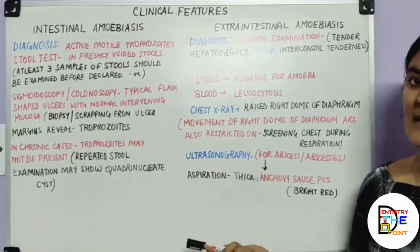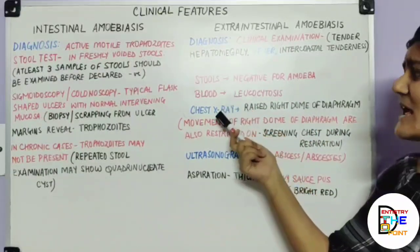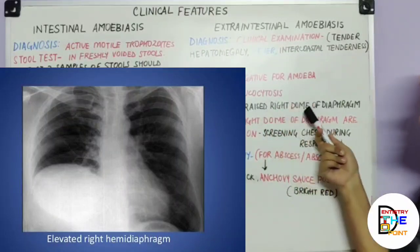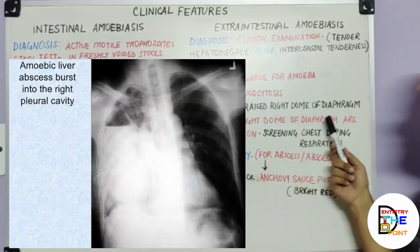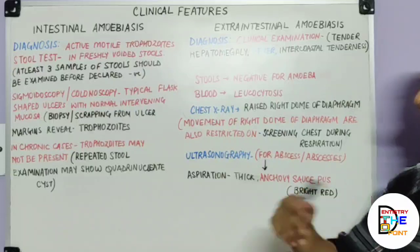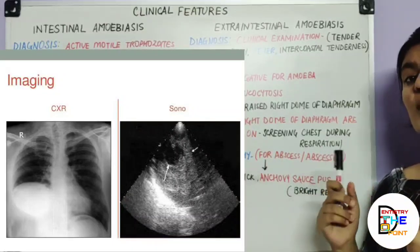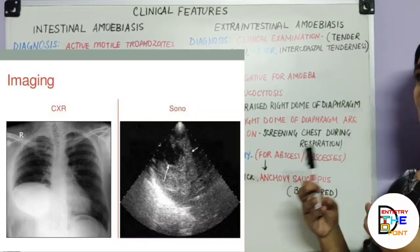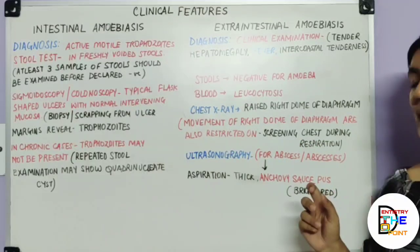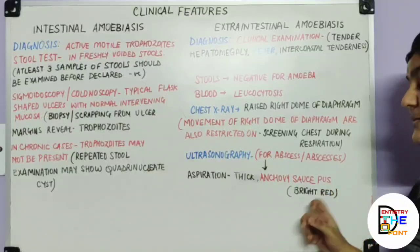On chest X-ray, since the liver is on the right side, there will be a raised right dome of the diaphragm with restricted movement on respiration screening. On ultrasonography, hyperechoic areas confirm the presence of abscesses and show the number and size of the abscesses. When these abscesses are aspirated, the fluid obtained is thick anchovy sauce pus — which is bright red in color.